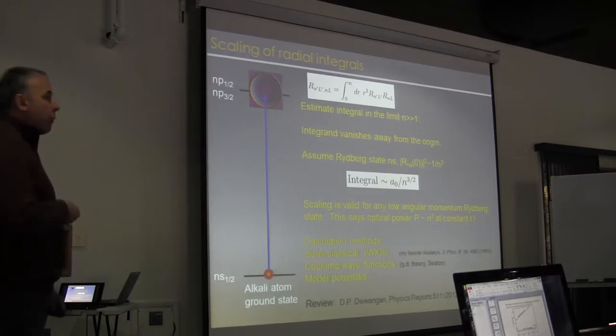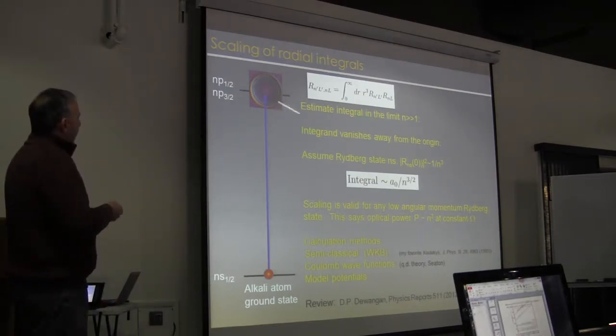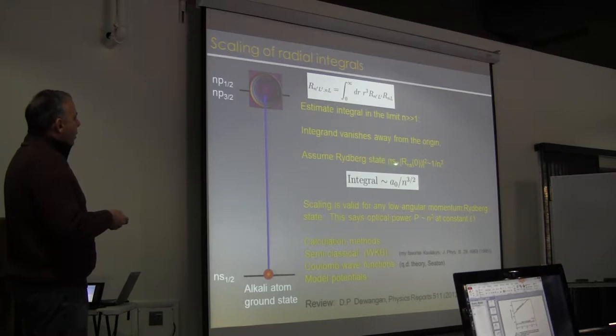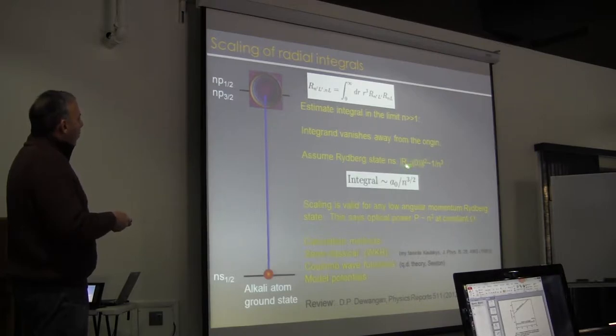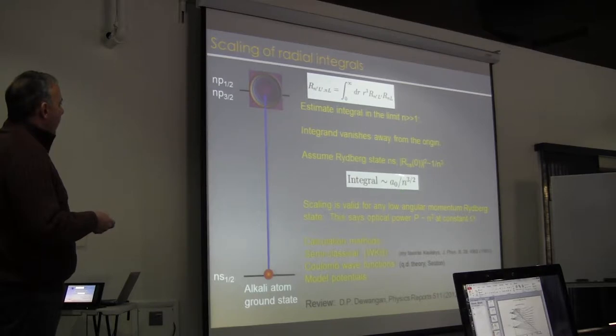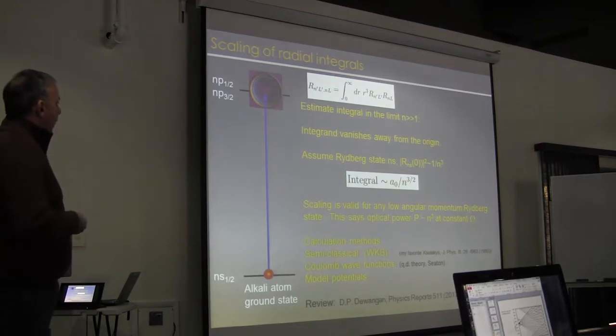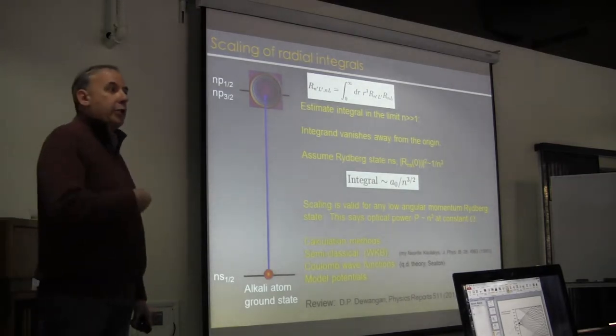Before we actually calculate them, how do those integrals scale? Well, we can estimate the integral quite simply in the limit where the Rydberg state is highly excited and n much greater than one. The integrand for L states greater than zero vanishes away from the origin. For Rydberg states, we know just by looking at the hydrogenic form for the wave functions, that the probability of finding the atom at the origin in an S state scales as 1 over n cubed. And therefore, the integral, despite the dimensional analysis, is going to scale as the atomic length, the Bohr length, divided by n to the three halves. It's the wave function, not the wave function squared, it's an integral. So we know that going from the ground state up to the highly excited S state, this integral should scale as 1 over n to the three halves, and that scaling is maintained also for the higher L states, not just the S states.